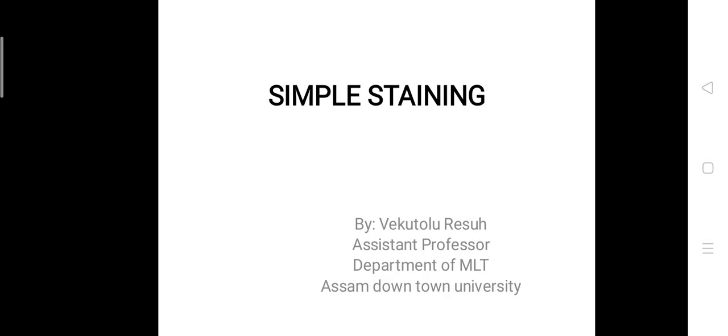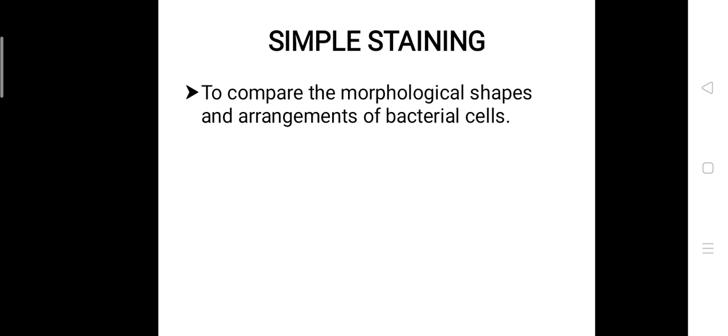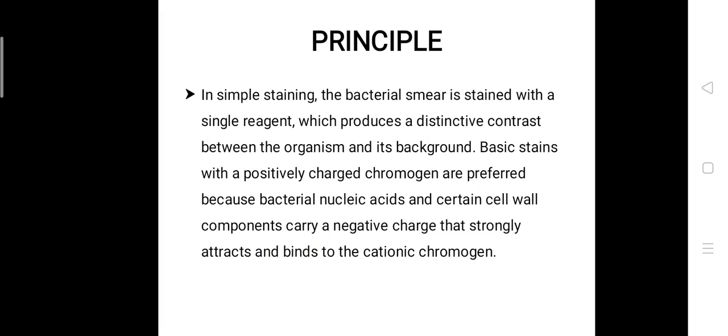Today we will be talking about simple staining. The main aim of simple staining is to compare the morphological shapes and arrangement of bacterial cells. As the name itself suggests, it is a very simple technique.